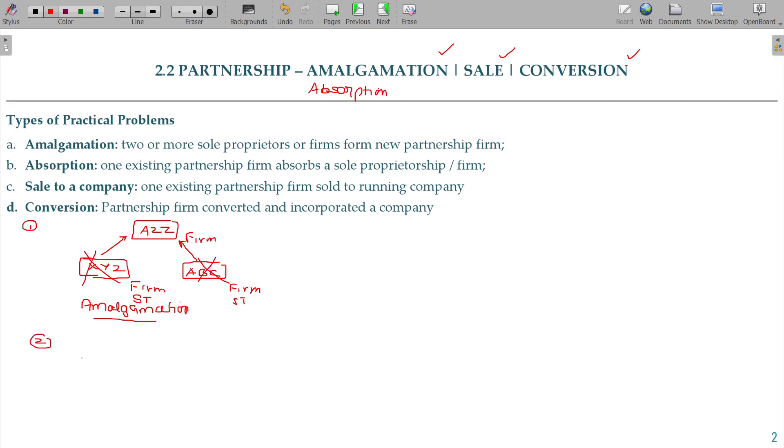Second, XYZ and ABC are firms. This is the leading firm. They simply make a payment to ABC and ABC is taken over by XYZ. Now ABC got closed. There is no new formation. This will be called absorption.